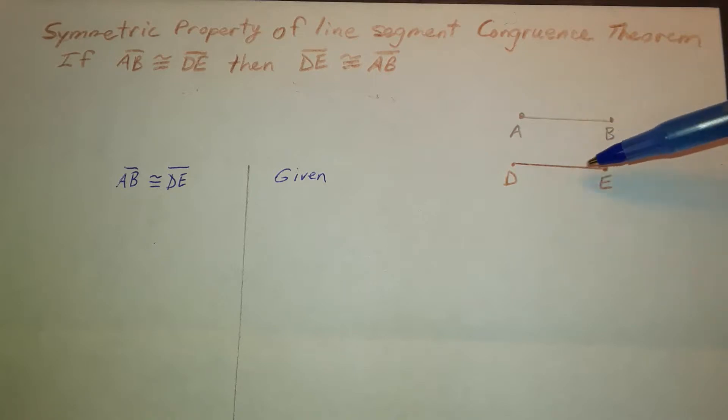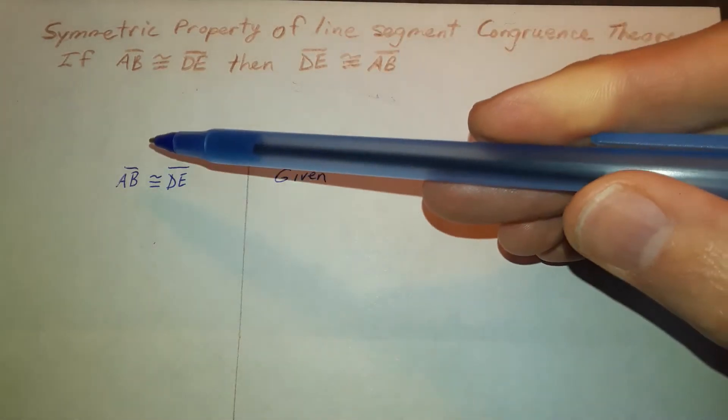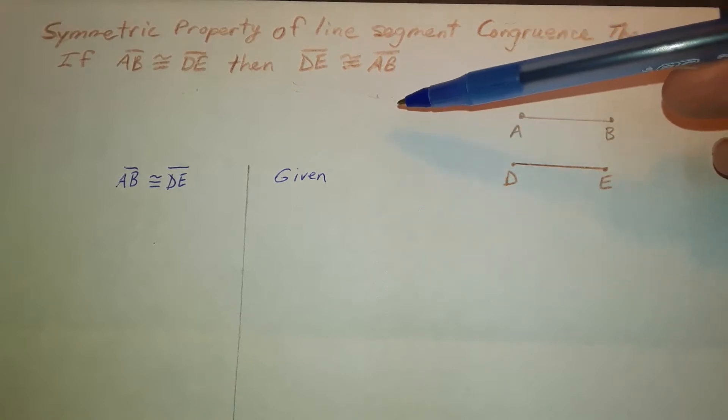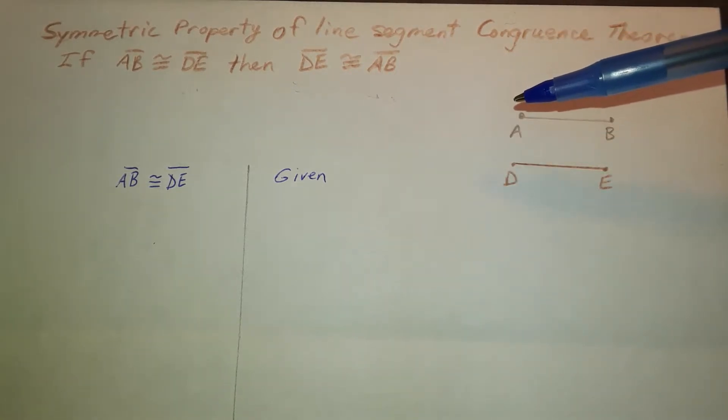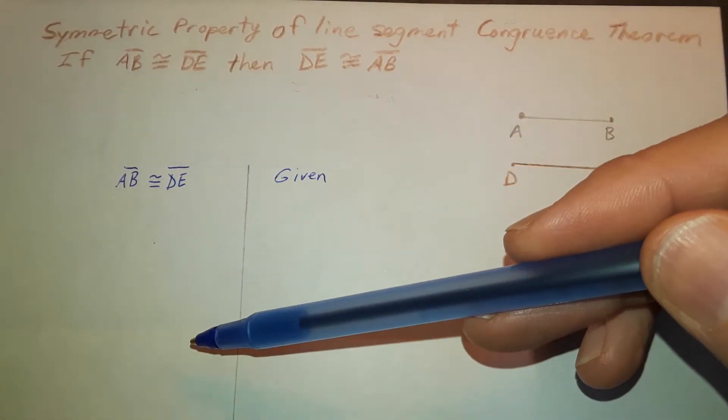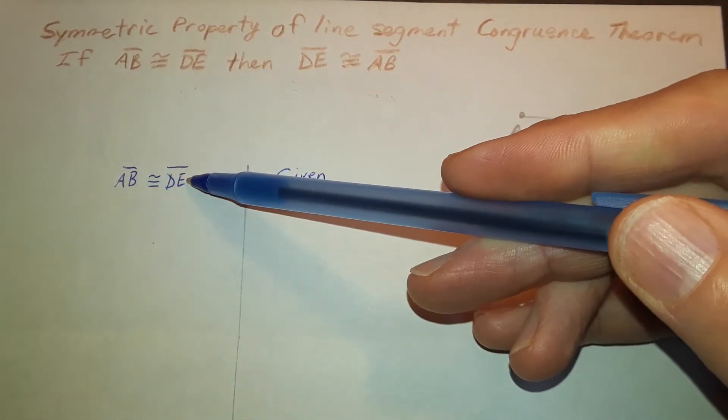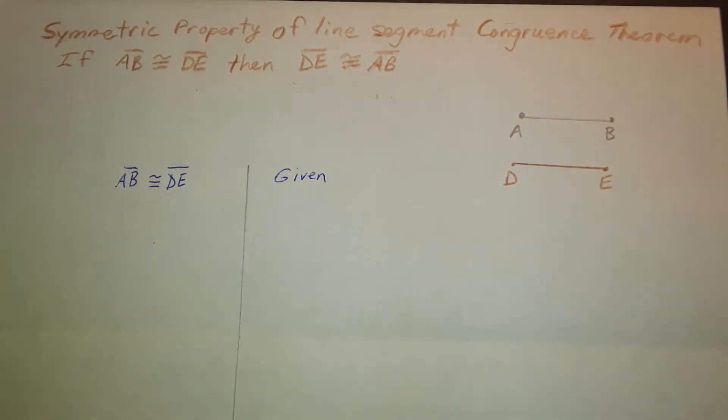Looking at this diagram over here, we have something that says congruence. And so we need to understand something about the definition of congruence. So this is something that you are going to have to know or you're going to have to look up. And it ends up that that is going to be a key to running through the logical thought here, is knowing what the definition of congruence is. The definition of congruence tells us that things are equal in measure but can occupy different places in space, which is exactly what I've got in my diagram here. So that's going to be my next step. I'm going to state that AB is equal to DE, and that's by the definition of congruence.